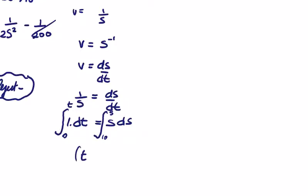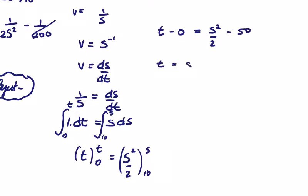So integrating 1 we're going to get t between t and 0. Excuse me for the covid cough, shouldn't be making videos while I'm sick. But we're going to put s squared over 2, integrate the right hand side between s and 10. So we're going to get t minus 0 on the left, equal s squared over 2 minus, putting 10 in, we're going to get 100 over 2, so 50. So t is equal to s squared over 2 minus 50.